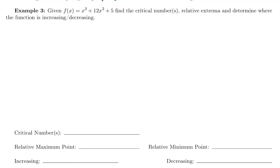The function f(x) is x cubed plus 12x squared plus 5, and we want to be able to locate any critical numbers, relative max and min, and determine where it's increasing and decreasing. Lots of information from the same two steps.